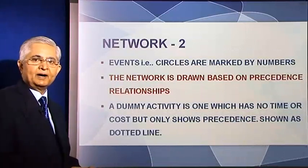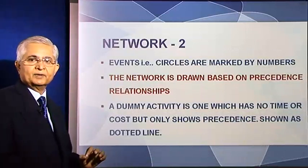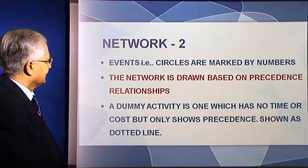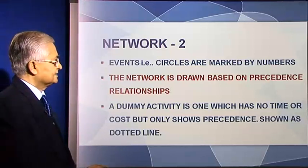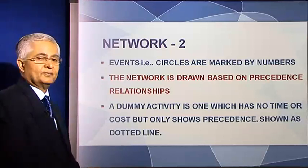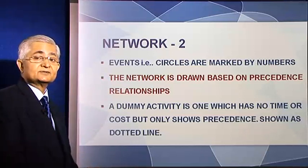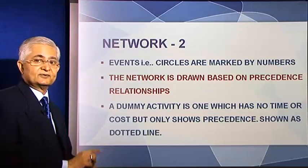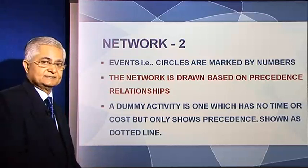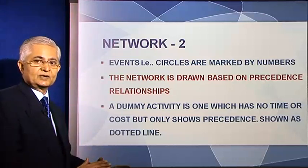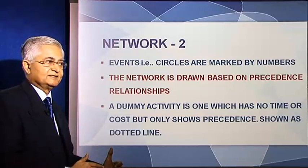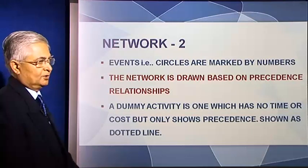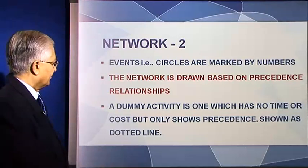These events are marked by numbers: one, two, three, four. The network is drawn on the basis of the precedence relationships. We have established the precedence relationships in the WBS — which activity should come first and which activities are linked. On that basis, the network is drawn.